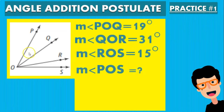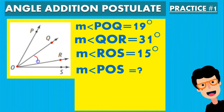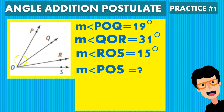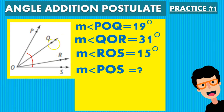Now let's take a look at the next example. It's the same diagram but we have new values. We're given POQ — this angle right here — which is 19 degrees. We're given QOR, which is 31 degrees. And they're also giving us angle POS. Because of the addition postulate, rays OQ and OR are between rays OP and OS. That means angle POQ plus angle QOR plus angle ROS is going to give us the big angle, angle POS, which is the one we're going to find.